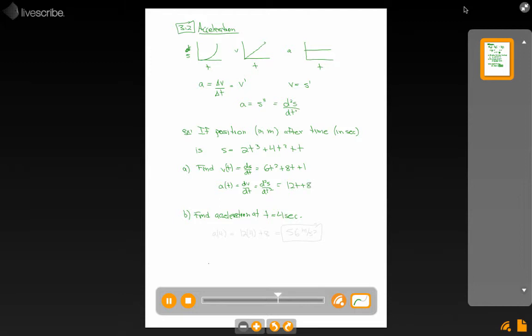So the acceleration after 4 seconds, the instantaneous rate of change of velocity with respect to time, is just a of 4, which is 12 times 4 plus 8. So 48 plus 8 equals 56. With our units, this is meters per second squared.